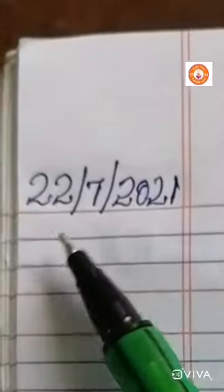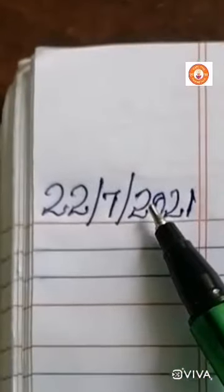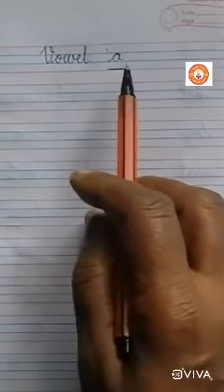Write today's date: 22nd bar 7 bar 2021. Write the heading: Vowel A. V-O-W-E-L. Vowel A. A sounds A.